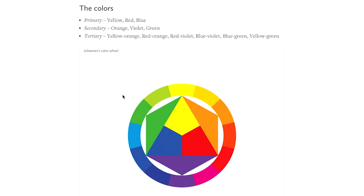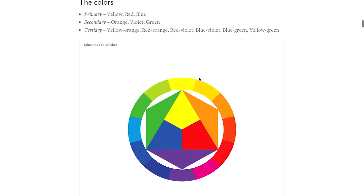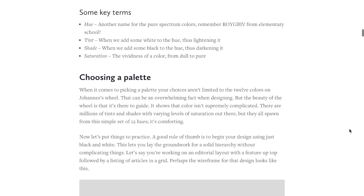There's this color wheel here, and the article goes through and explains what the color wheel is, where it came from. It explains primary, secondary, and tertiary colors. So primary, of course, is yellow, red, blue. Secondary is orange, violet, green. And tertiary is yellow-orange, red-orange, red-violet, blue-violet, blue-green, and yellow-green. So you can see those on the color wheel with those helpful triangles to kind of figure that out.